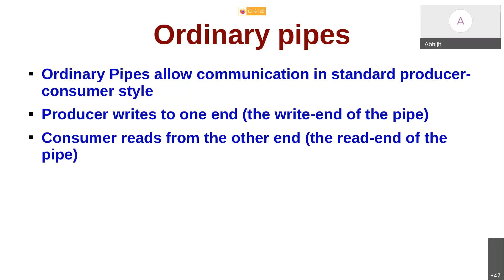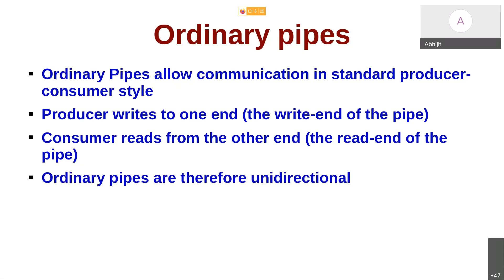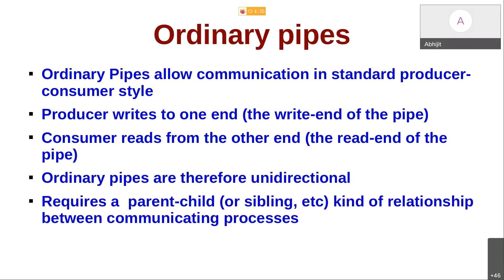A pipe is like a water pipe: you push water at one end and it comes out the other end — it is a queue. An ordinary pipe is also a queue where you write at one end and the data comes out the other end in FIFO (first-in-first-out) fashion. Ordinary pipes are unidirectional — you write at one end and read from the other. A limitation is that you cannot use ordinary pipes between any two random processes; you can only use them between related processes, most typically through a parent-child relationship.